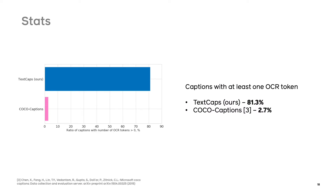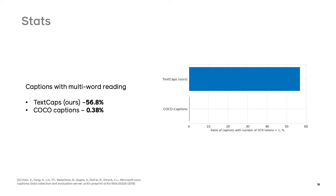The statistics show that TextCaps contains many more OCR tokens in the captions, as well as in the images, than the popular COCO Captions dataset. While COCO Captions contains only 2.7% of captions with OCR tokens, in our dataset this number is higher than 80%. And the majority of our captions — 56.8% — contain not just one but multiple OCR tokens, which demonstrates multi-word reading. This is only the case for less than one percent of COCO Captions.